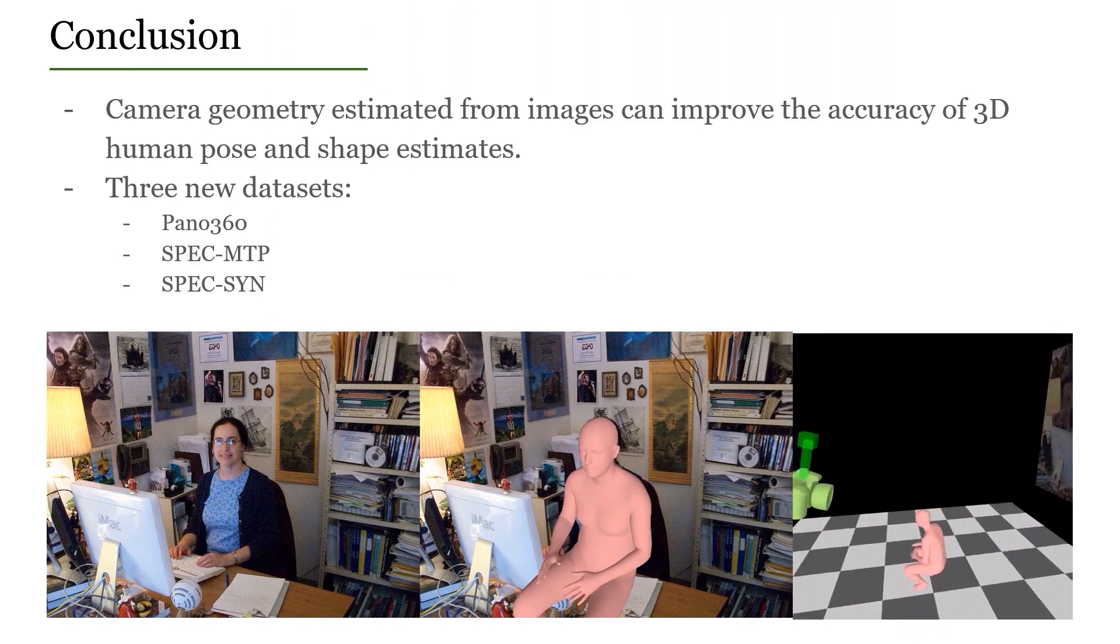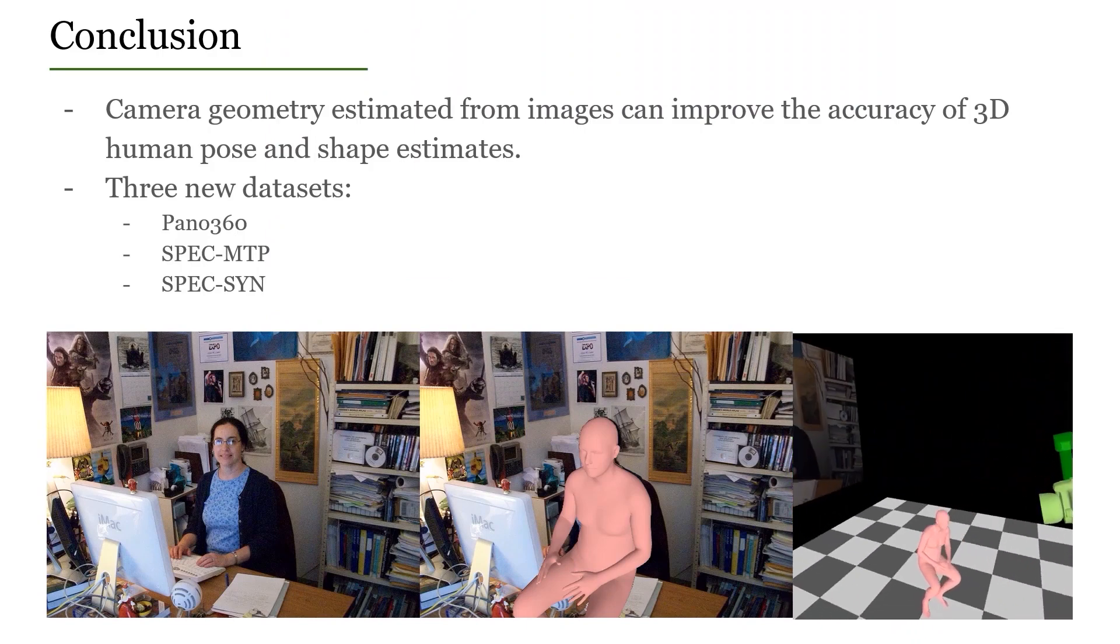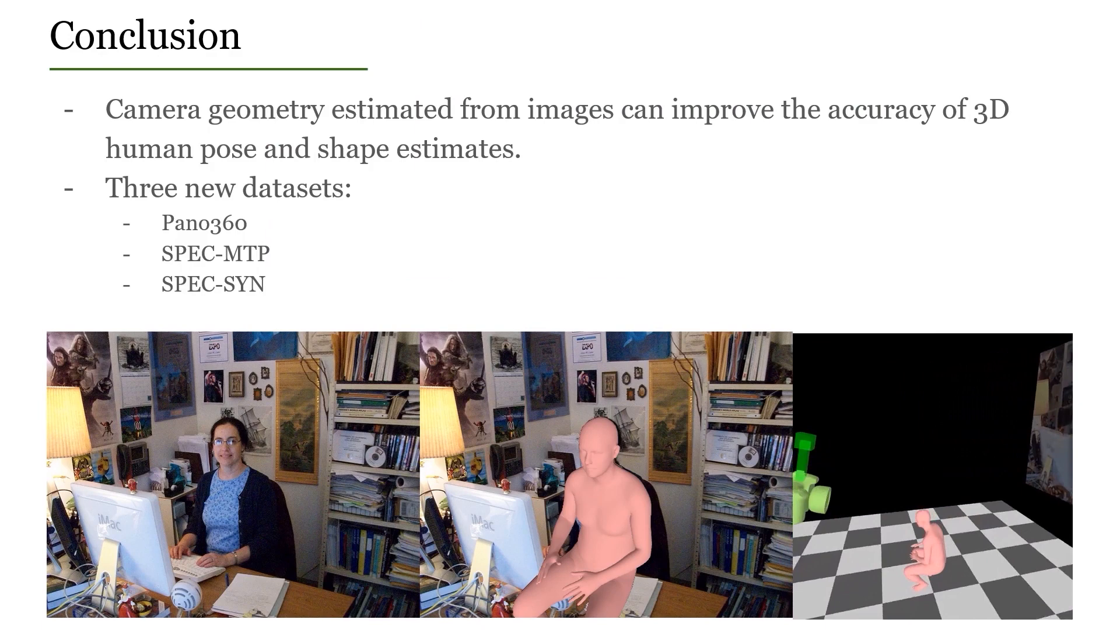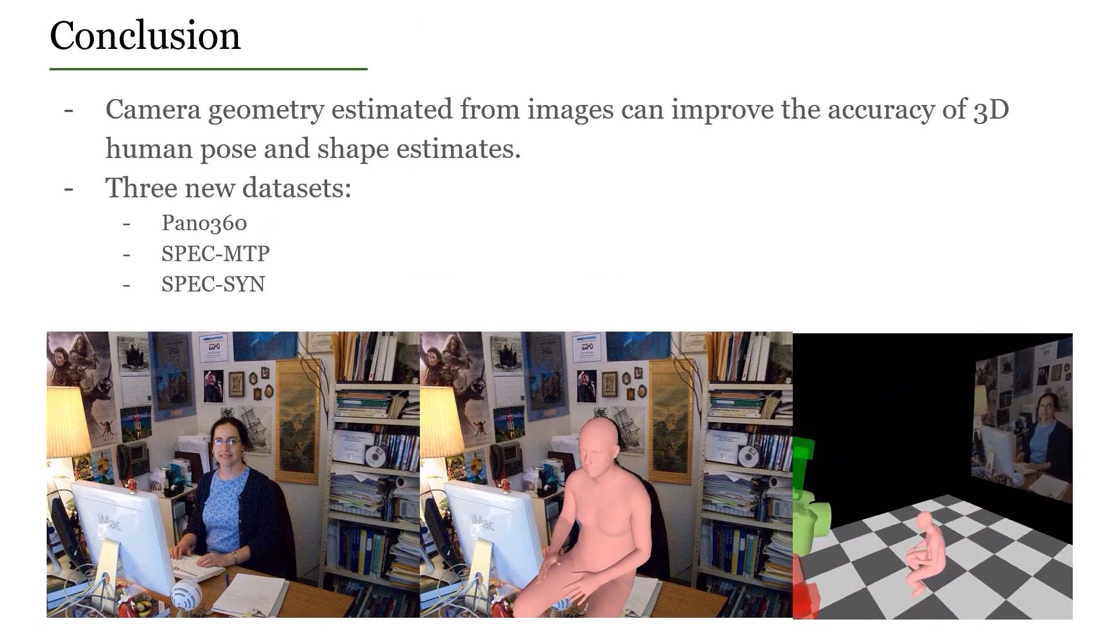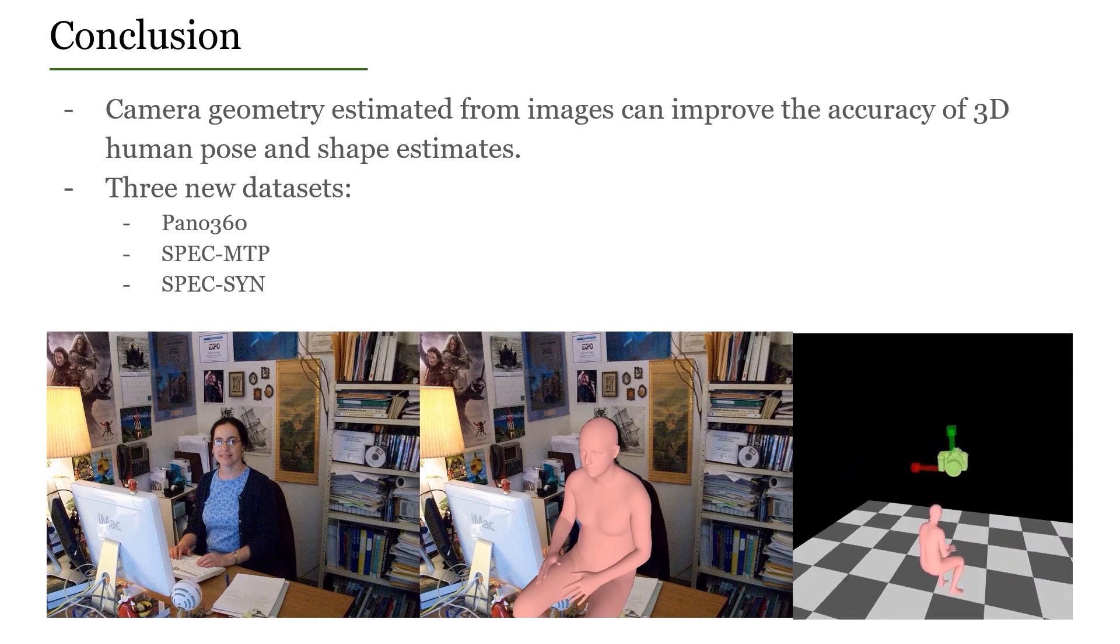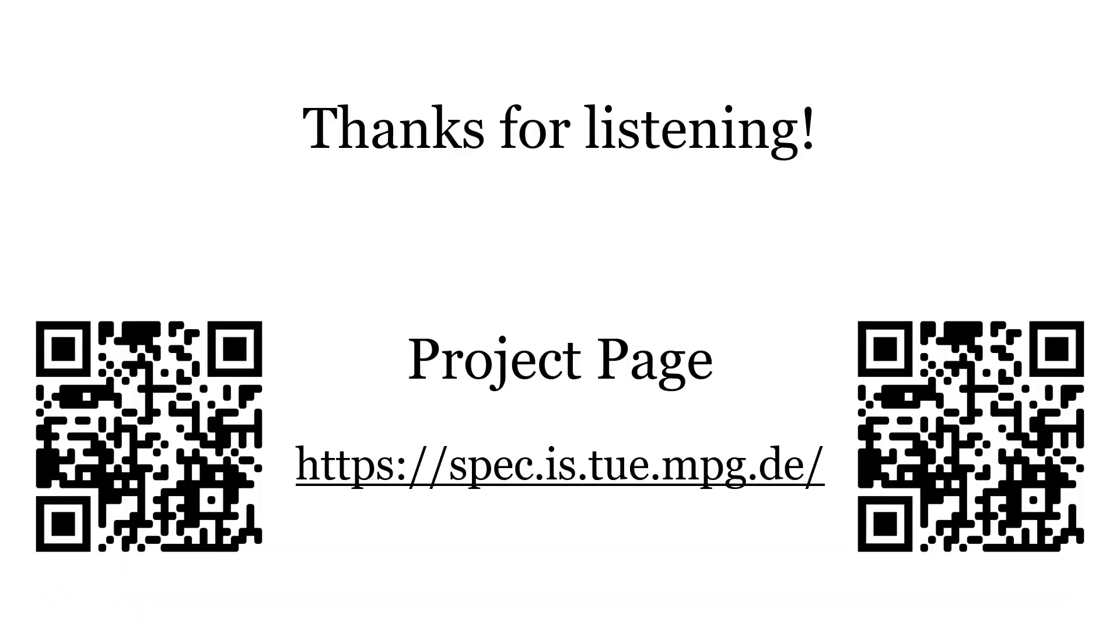In conclusion, we demonstrate that camera geometry can be estimated from images and can effectively be leveraged to improve the accuracy of 3D human pose and shape estimates. We introduce three new datasets. Thanks for listening.